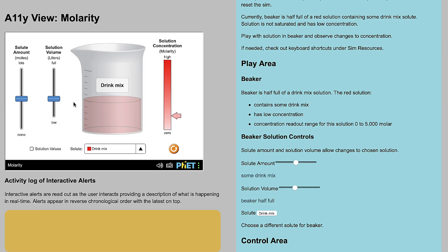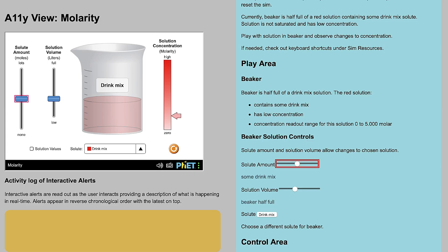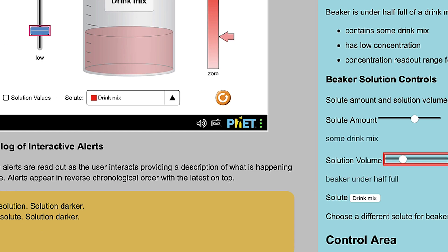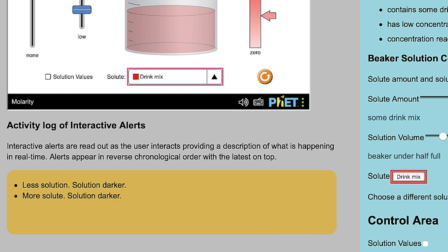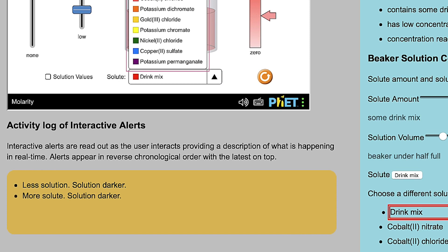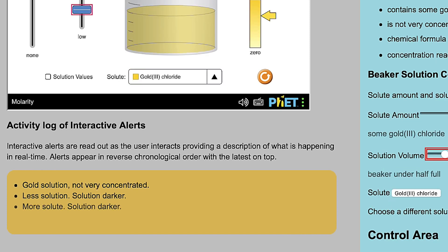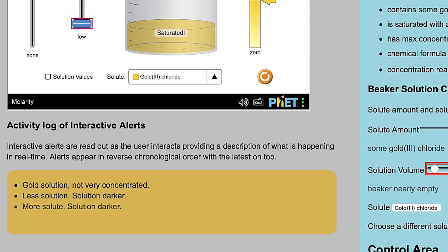The blue column on the right dynamically displays the current state description that screen reader users can navigate and review. On the left, the orange box displays the changes that are announced as a screen reader user interacts and makes changes.